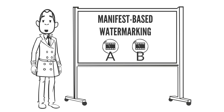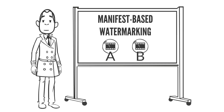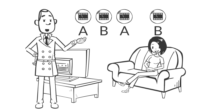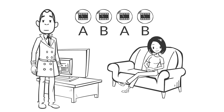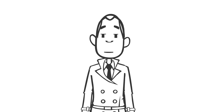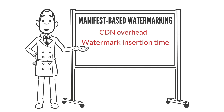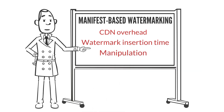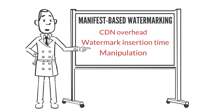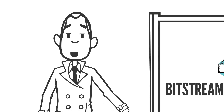Manifest-based watermarking works by creating two versions of every short segment of a TV show — an A and B version. Each client gets a stream built from different combinations of A and B segments. If this stream is copied, we can identify the source from the unique pattern. But this approach has drawbacks: the CDN needs to send and store twice as much content — both A and B versions of every file. Only one binary digit of code is embedded in each segment, so it might take several minutes to embed a code. And manipulating manifests from two or more users can create a new combined stream that can't be accurately decoded.